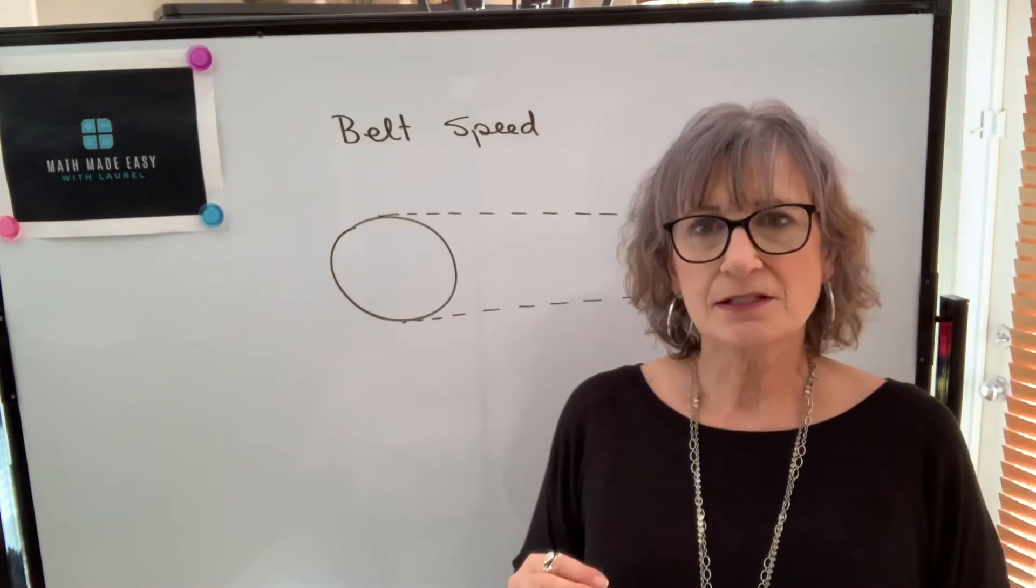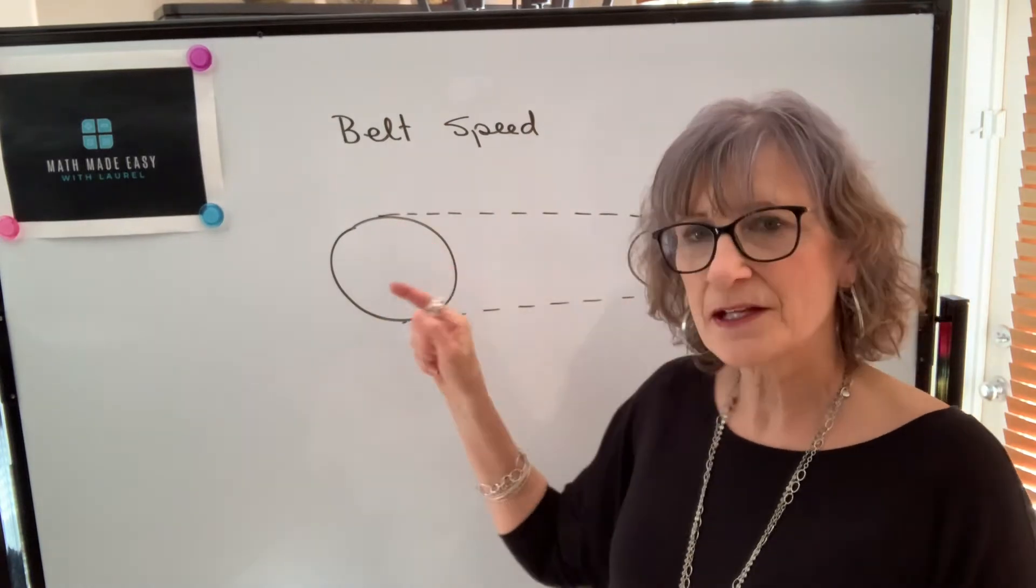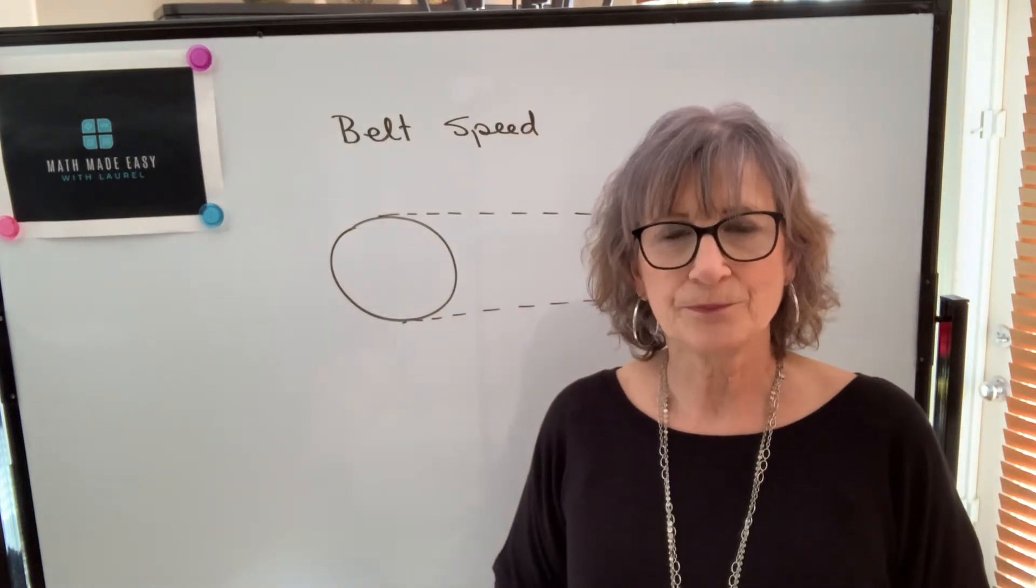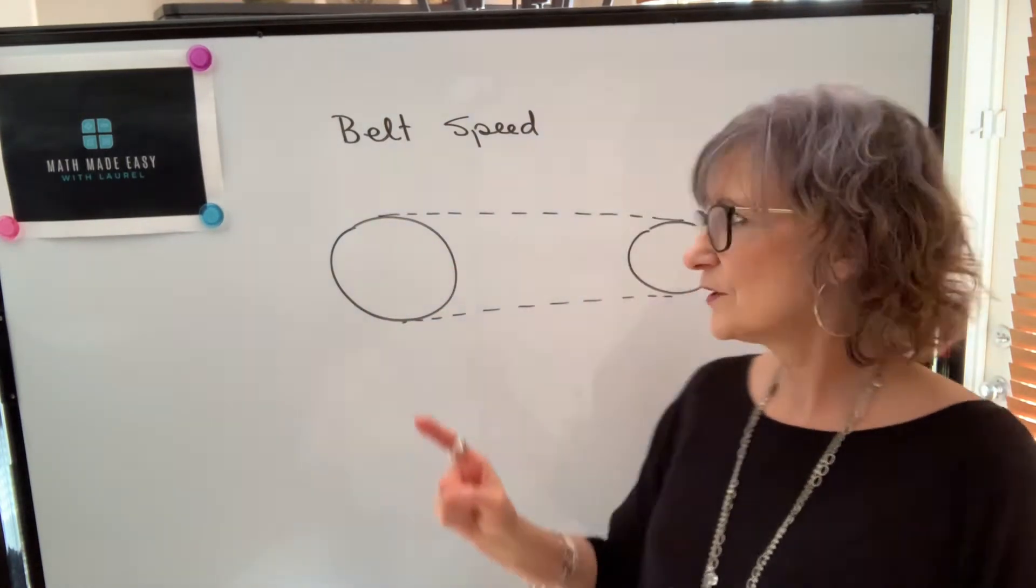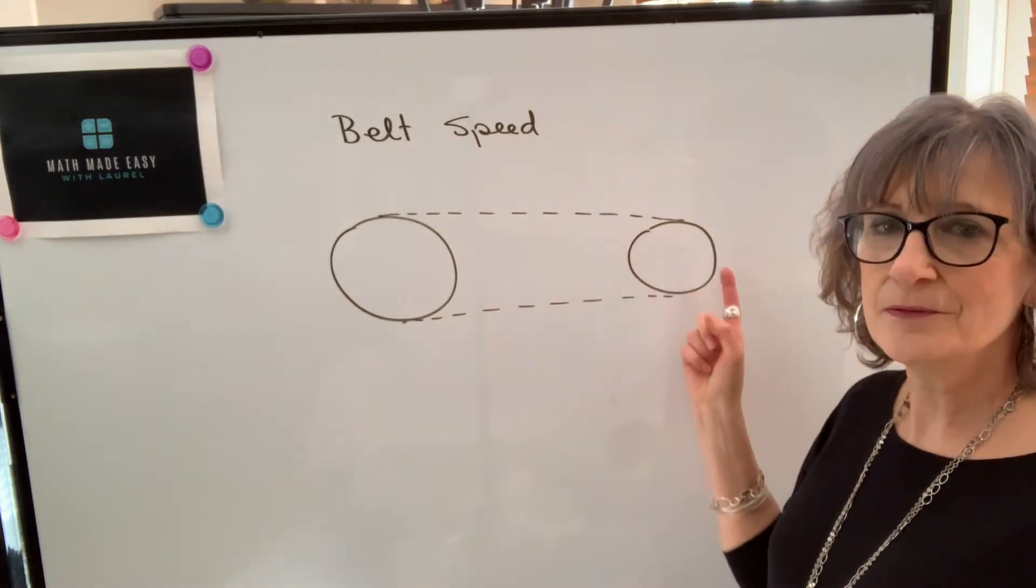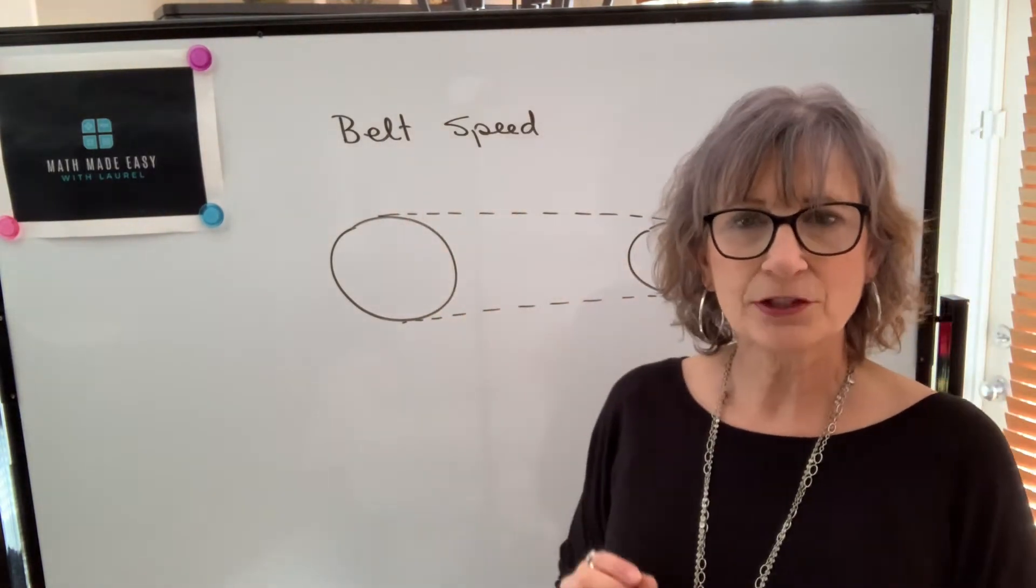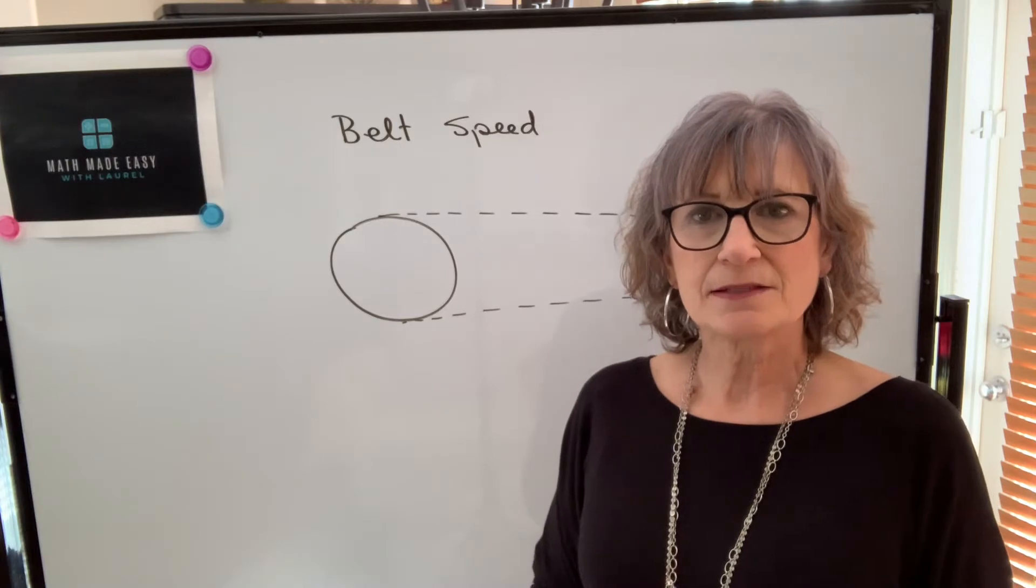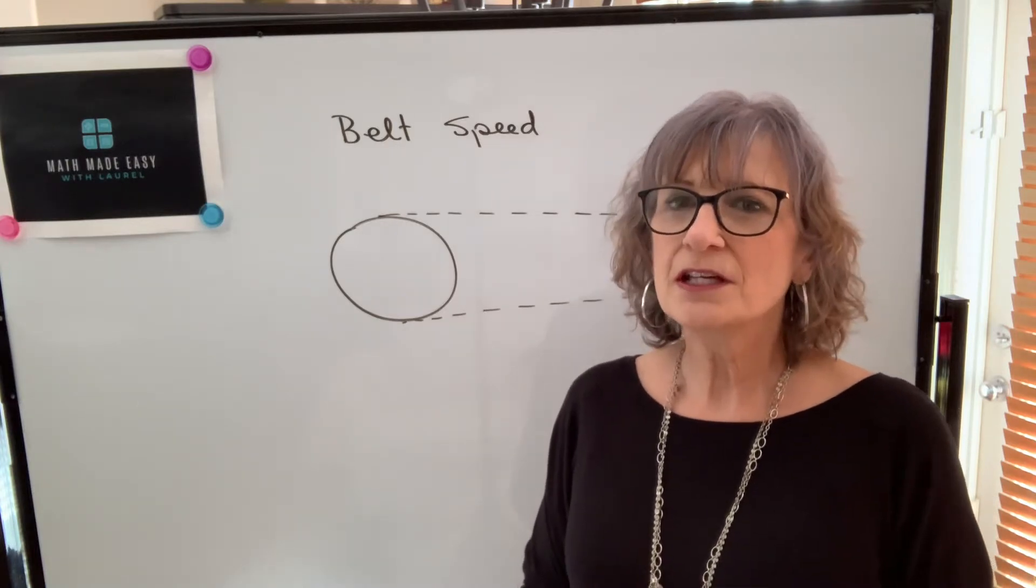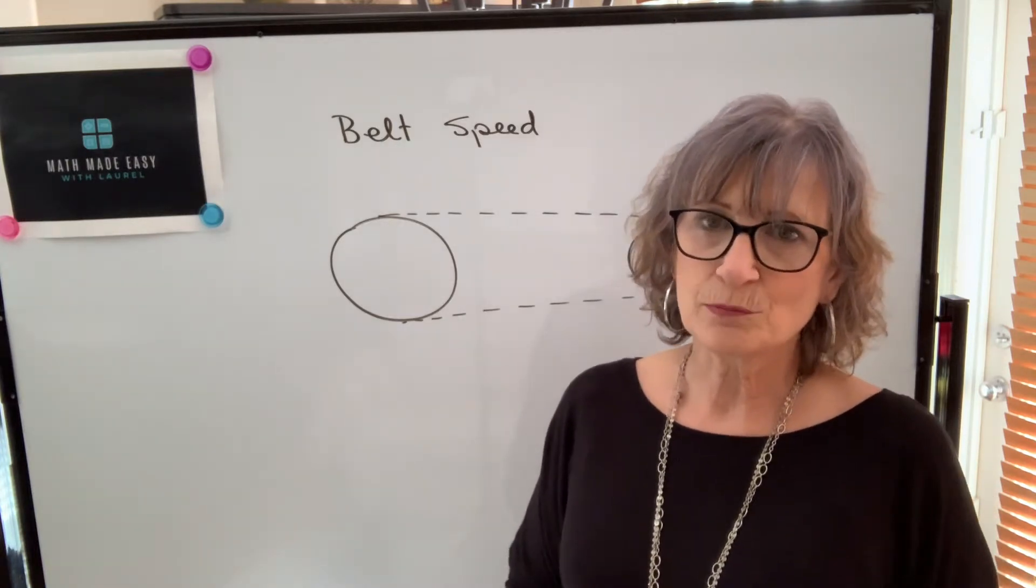That speed is the turning speed and that's measured in revolutions per minute. On the other hand, if we're asked to find the belt speed, that's going to be a linear speed and it's measured in usually feet per minute or possibly feet per second.